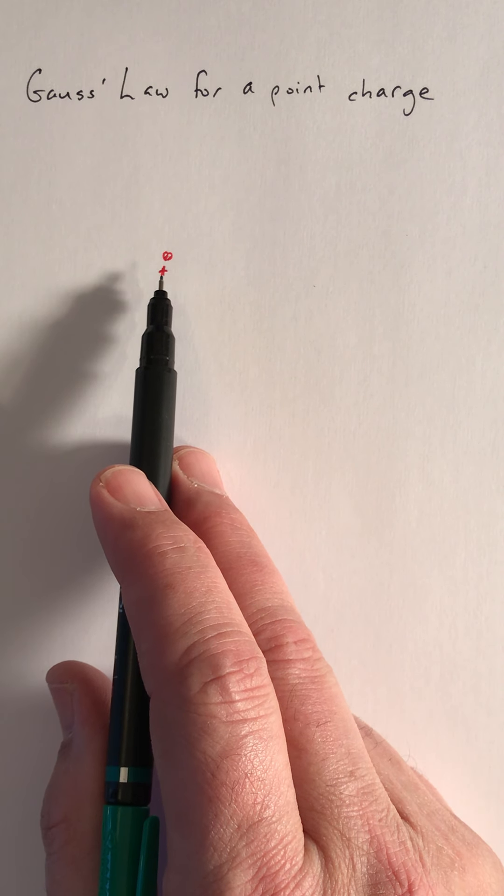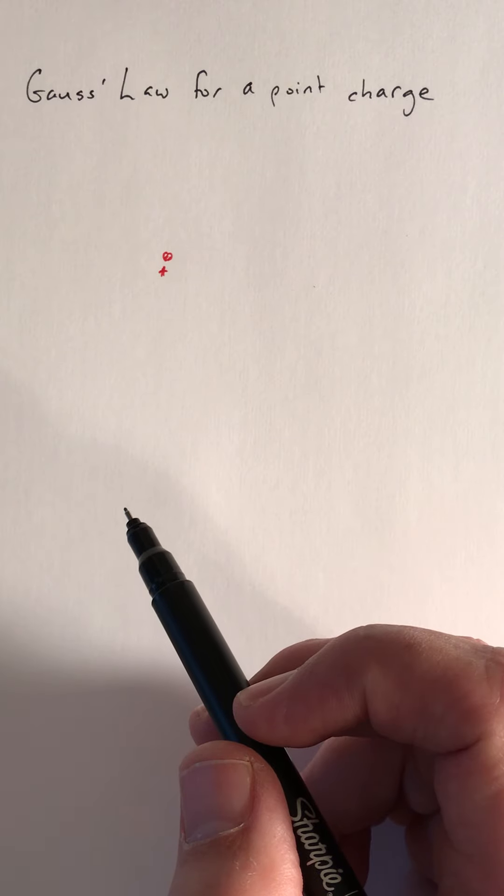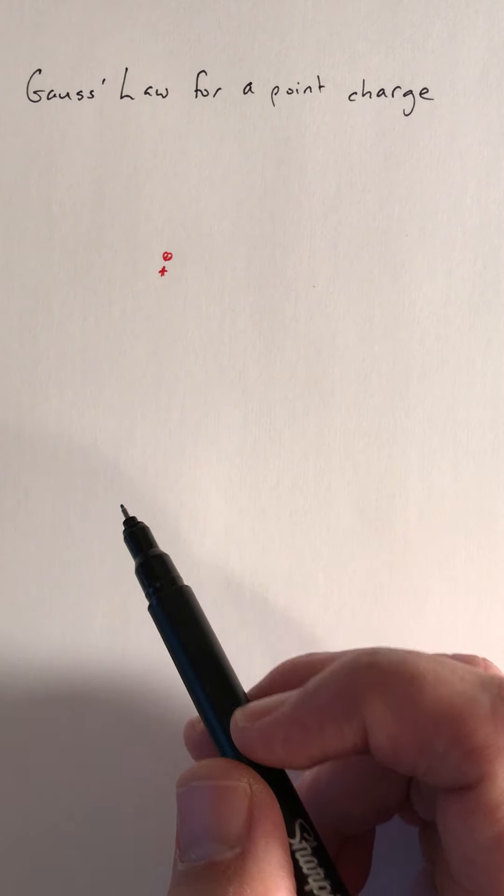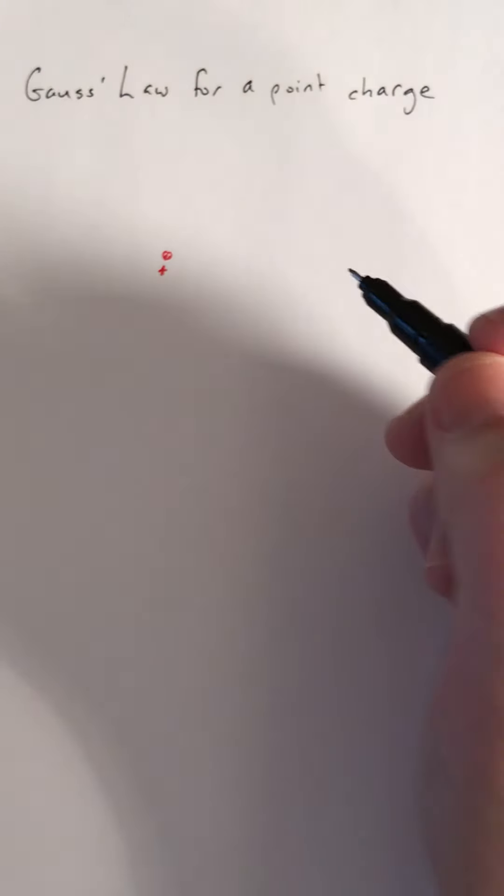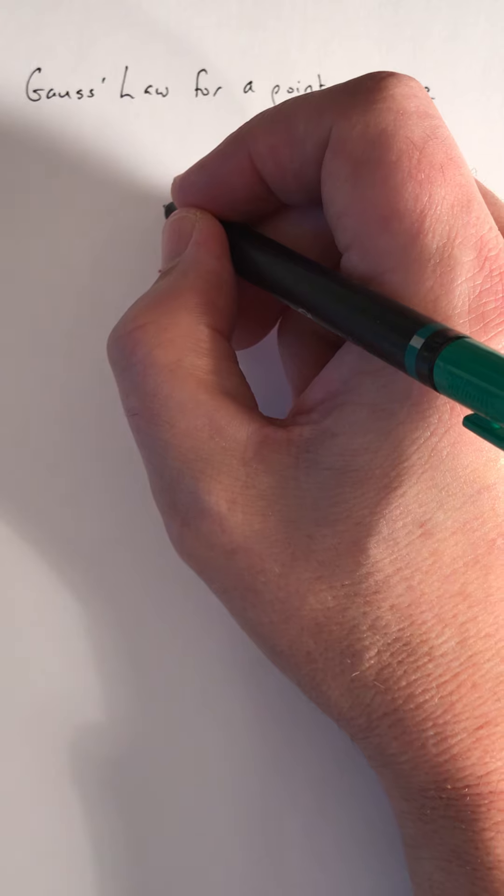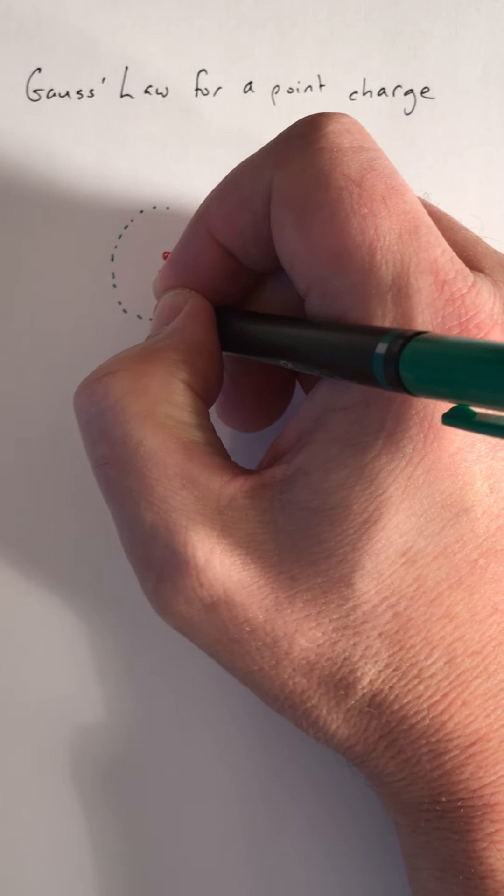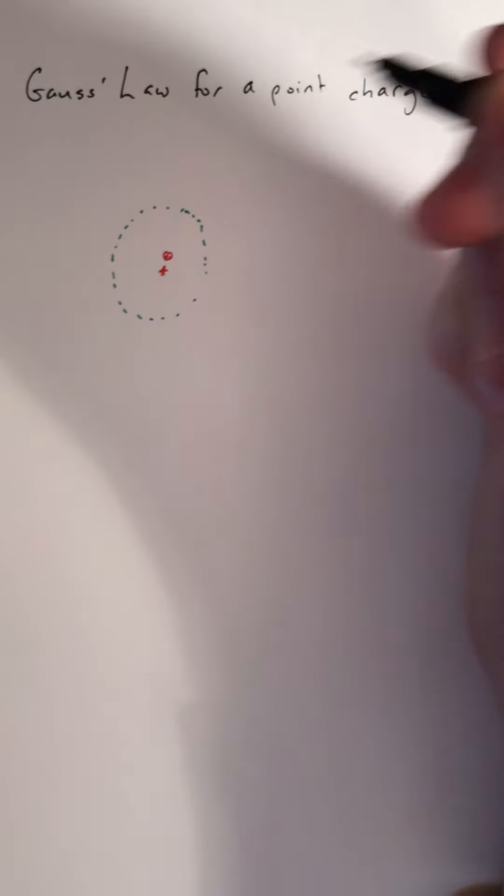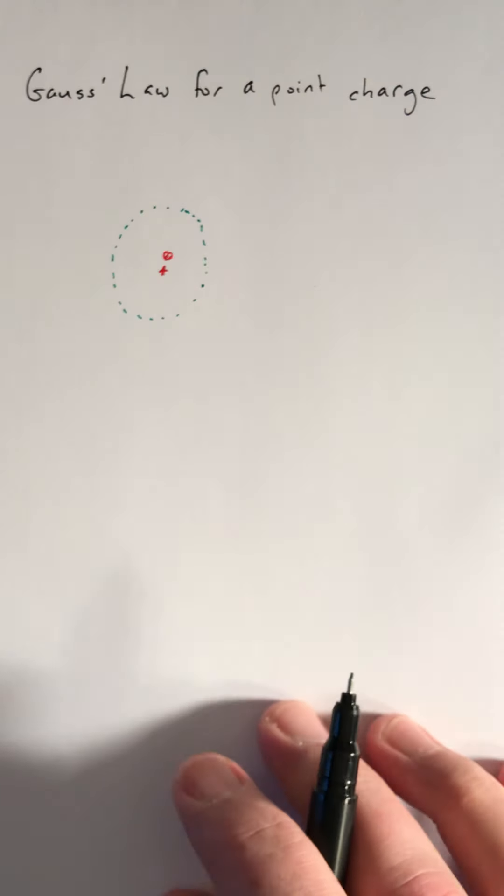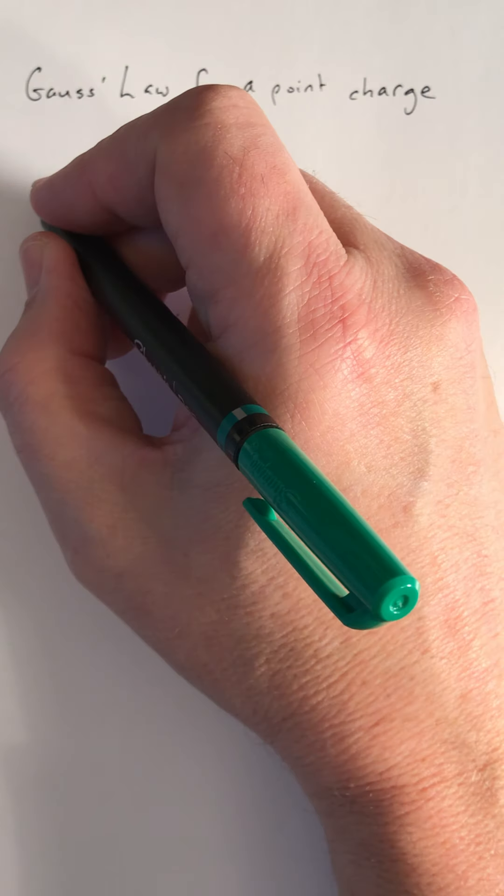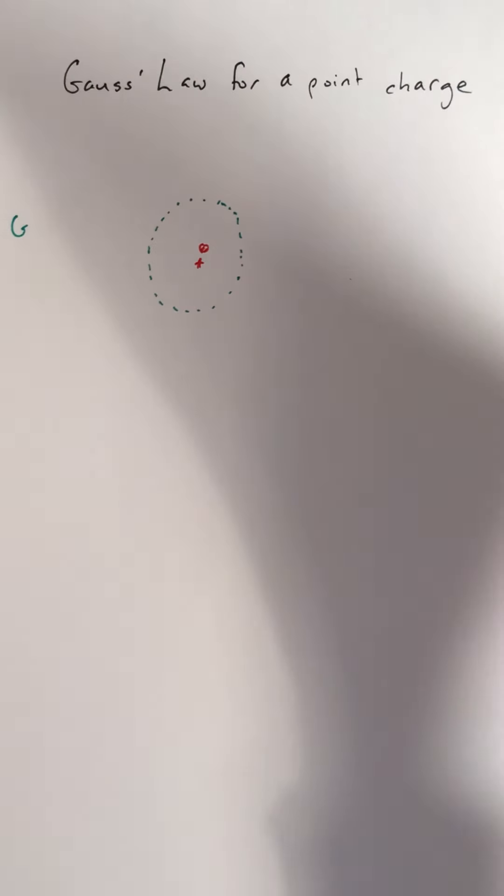The point charge is spherically symmetric, so it doesn't matter what the orientation of the charge is. The Gaussian surface that we want to use should share that same symmetry. So the Gaussian surface is going to be a sphere that doesn't have any preferred direction or orientation, and it's a sphere that is centered on the point charge.